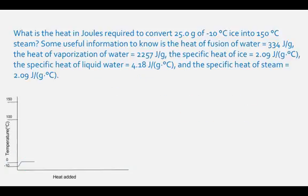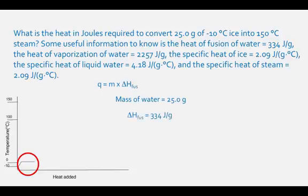The second part of the heating curve is the energy it takes to break intermolecular forces from a solid to a liquid. This heat equation is Q equals mass times the heat of fusion. The mass of water is 25.0 grams and the heat of fusion of water is 334 joules per gram. The heat energy of this transition is calculated as 25.0 grams times 334 joules per gram, which equals 8,350 joules.